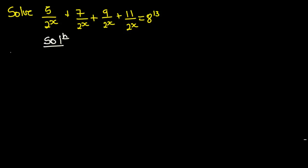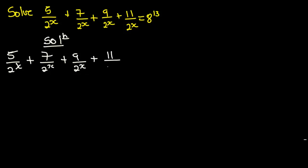From the question we are given: 5 over 2 to the power x, plus 7 over 2 to the power x, plus 9 over 2 to the power x, plus 11 over 2 to the power x, is equal to 8 to the power 13.